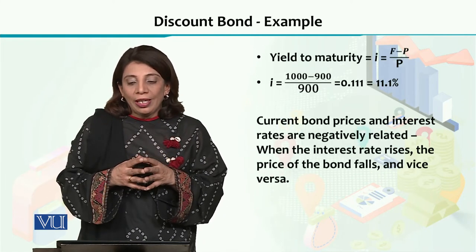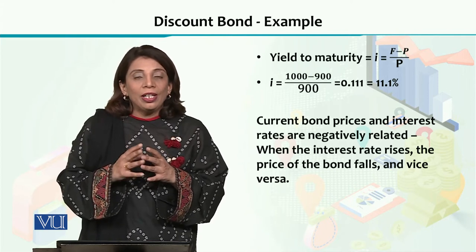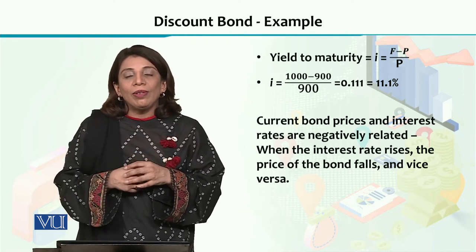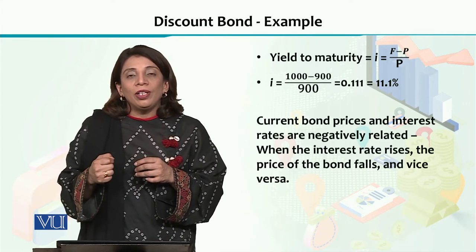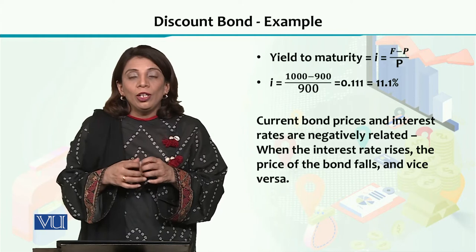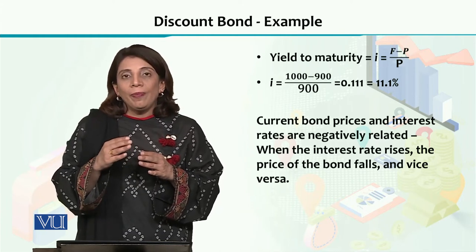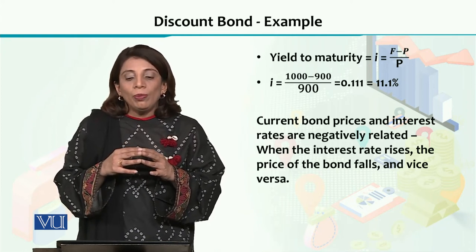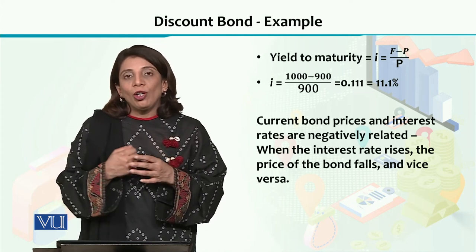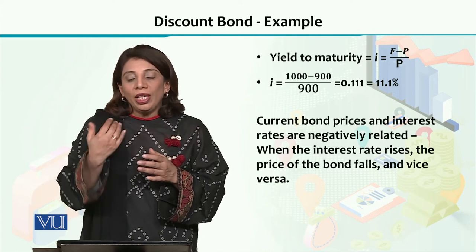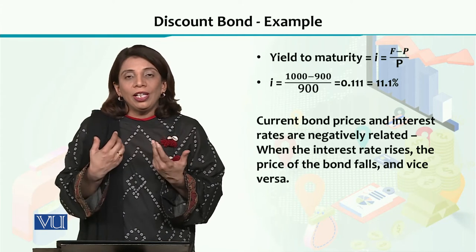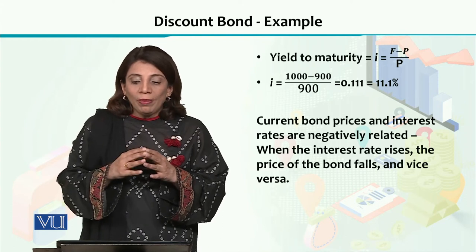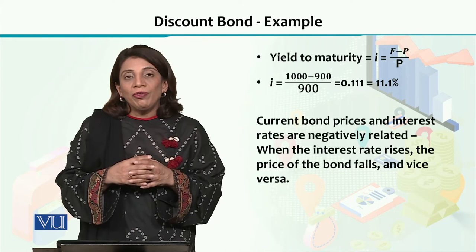तो इसके उपर yield to maturity निकालने पर आपके पास value निकलेगी 0.111, which can be written in percentage form as 11.1%. तो आपको पता चल सकता है कि अगर मैं एक T-bill जिसकी face value 1000 है, उसको 900 रुपे में खरीद रहा हूं, तो maturity के उपर मुझे 1000 रुपे में बेचने से 11.1% का yield to maturity, यानी 11.1% का return मिलने वाला है।